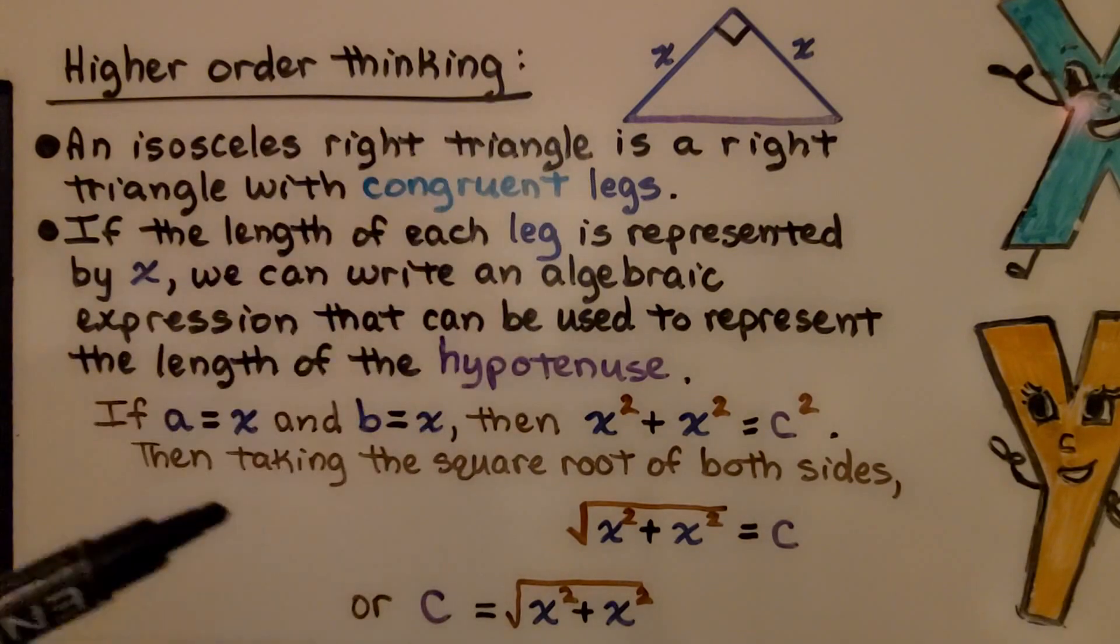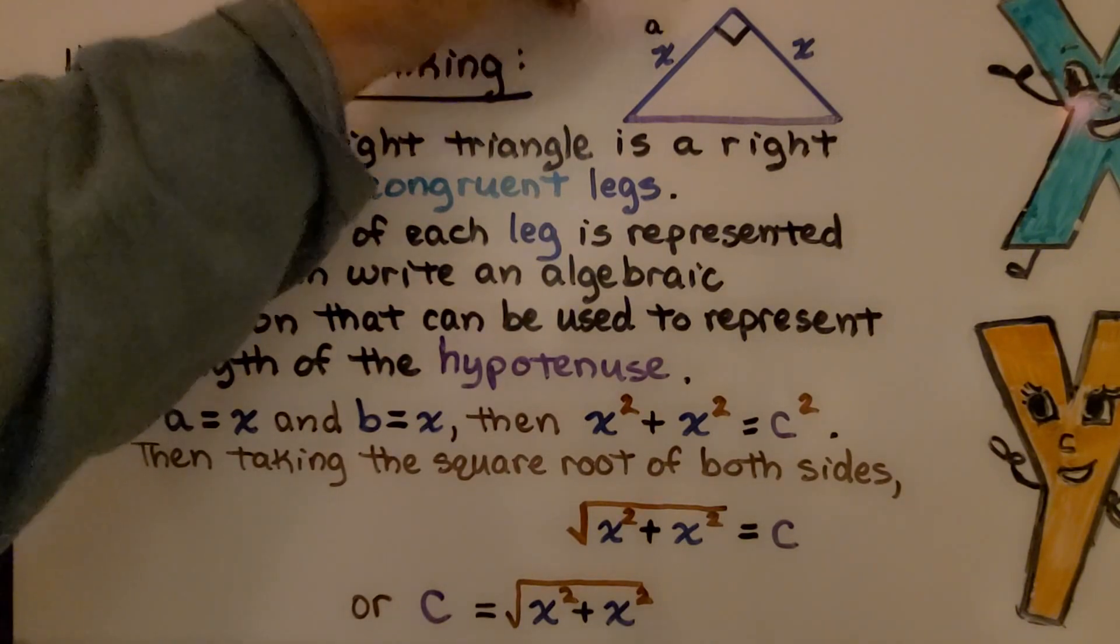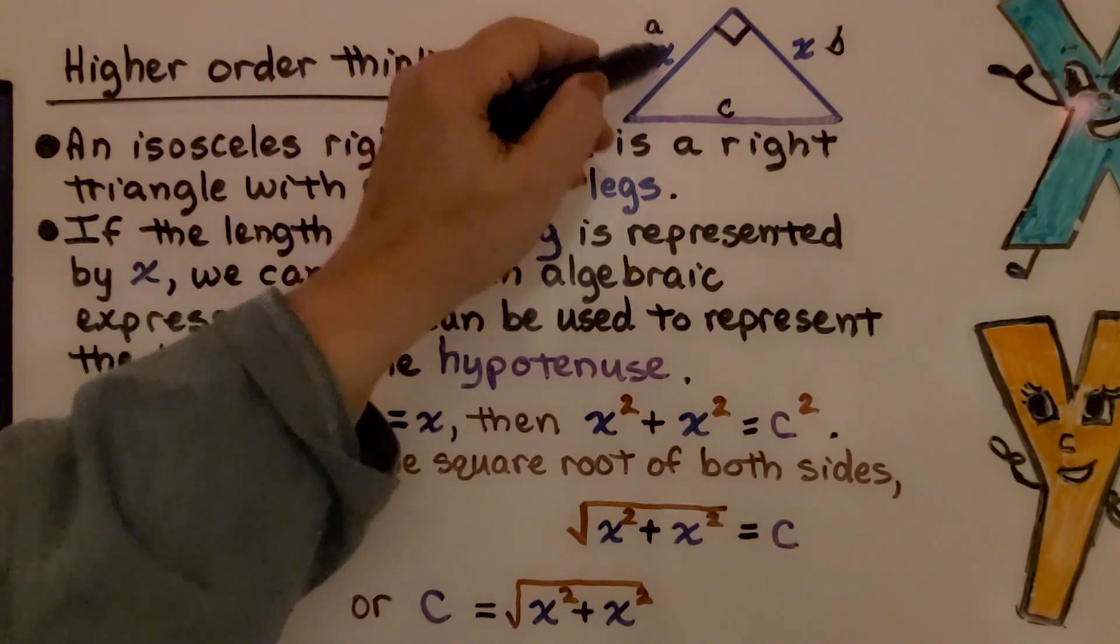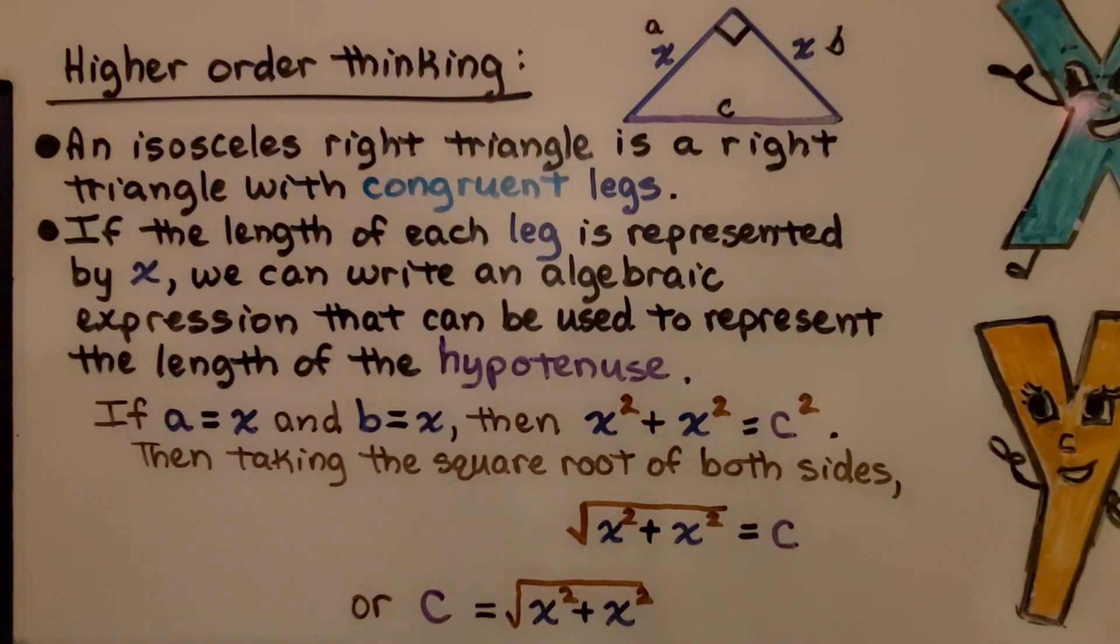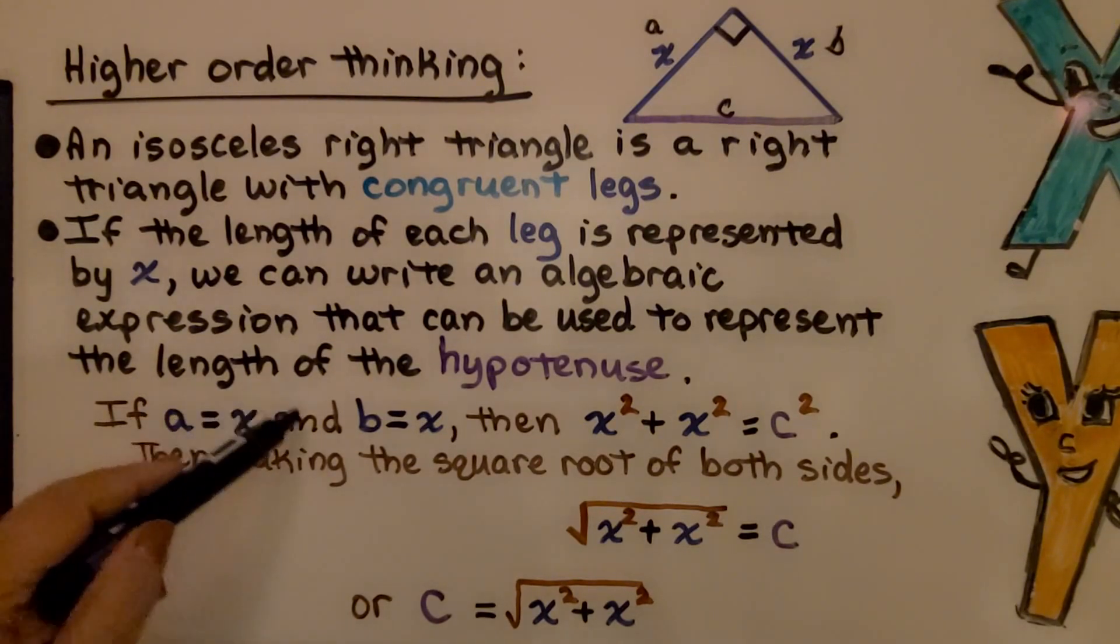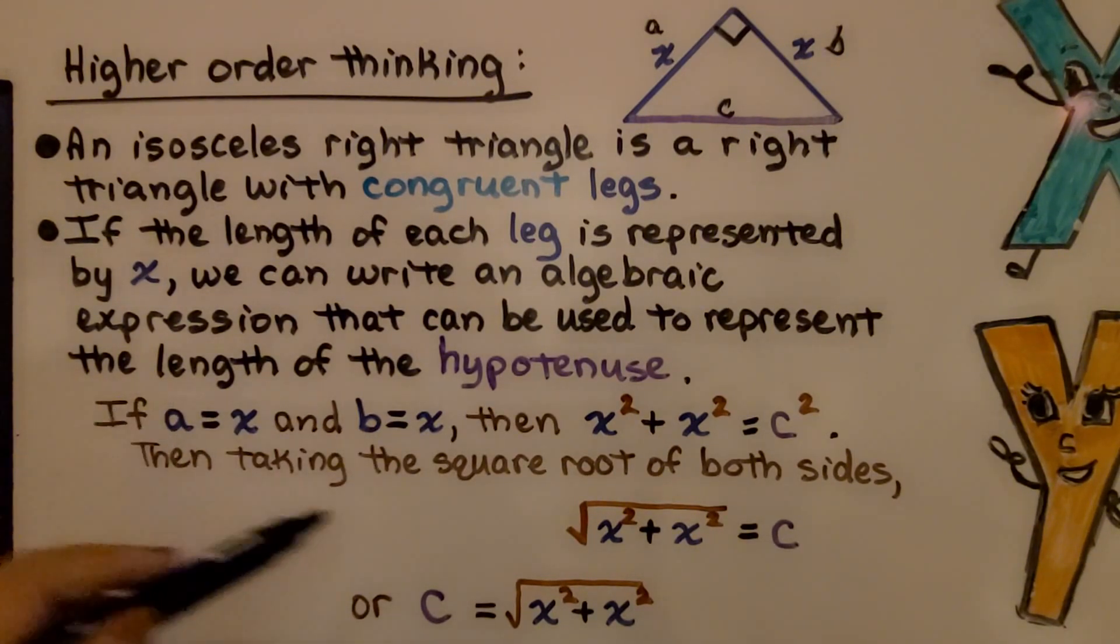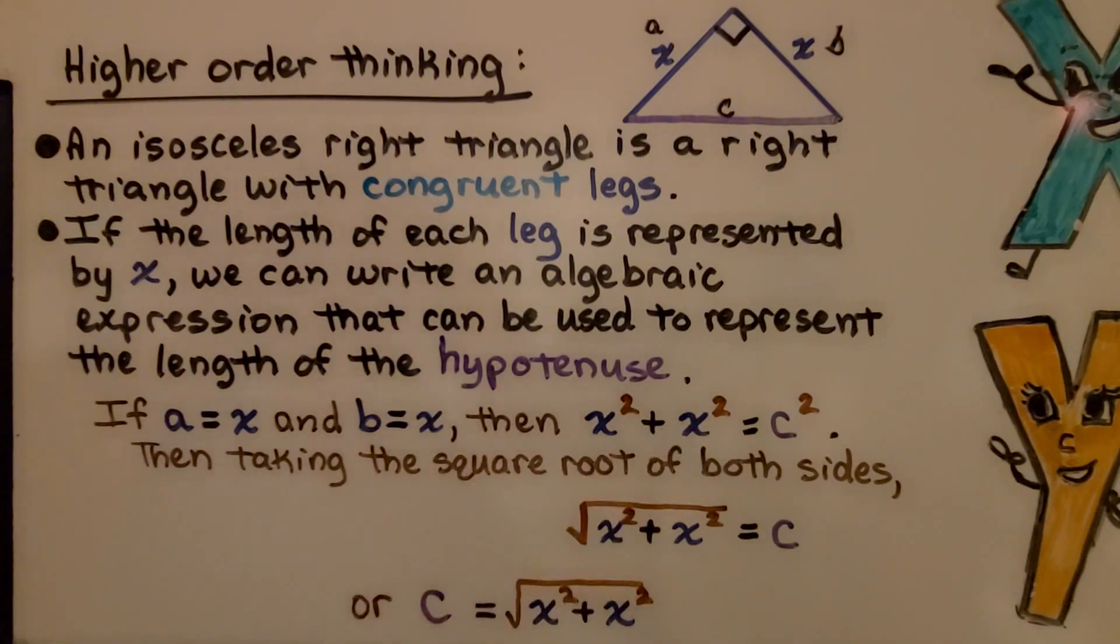So remember in the Pythagorean theorem it said a squared plus b squared equals c squared. Well if this is a, and this is b, and this is c, that means x is a and x is b, or a is x and b is x. So if a is equal to x, and b is equal to x, well then, when we do the Pythagorean theorem, instead of a squared we'd have x squared, and instead of b squared we'd have x squared. And they'd be equal to c squared. Well, then taking the square root of both sides we remove that two exponent and put a radical sign around the left side. Or we can say c is equal to the square root of x squared plus x squared.